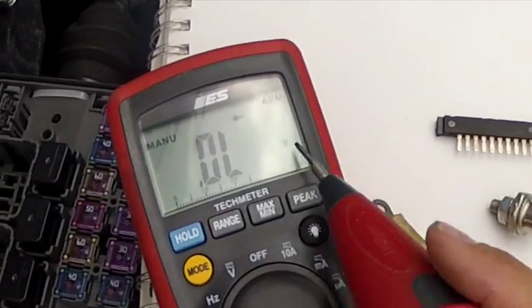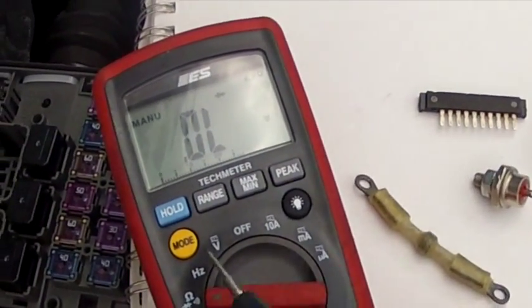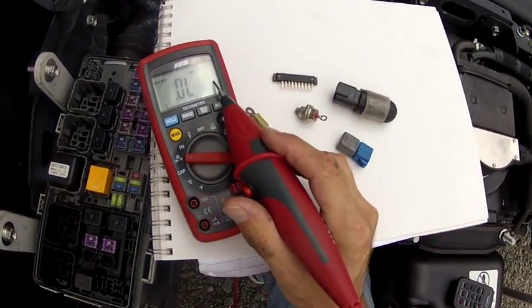And notice it's in volts, but it's on the ohm setting, so don't let that throw you off. Diodes are measured in volts.